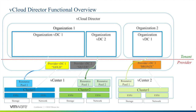An organization virtual data center provides resources to an organization and is partitioned from a provider virtual data center. An organization virtual data center provides an environment where virtual systems can be stored, deployed, and operated. They also provide storage for virtual media such as floppy disks and CD-ROMs. A single organization can have multiple organization virtual data centers. An organization virtual data center is mapped to a vSphere resource pool.